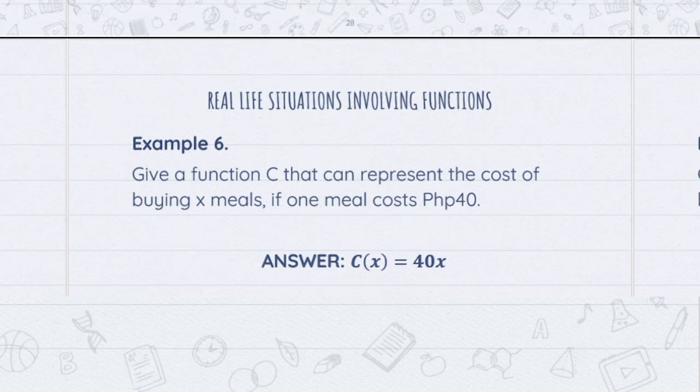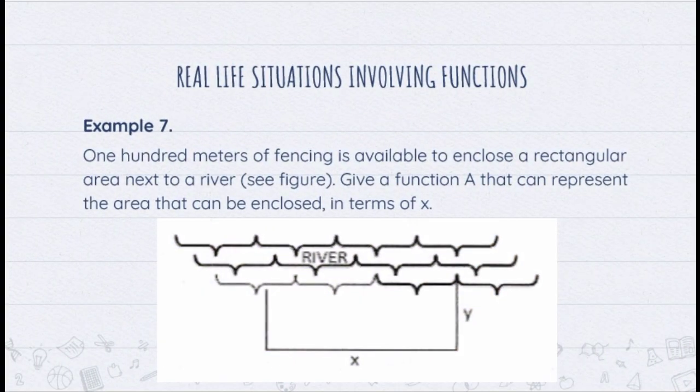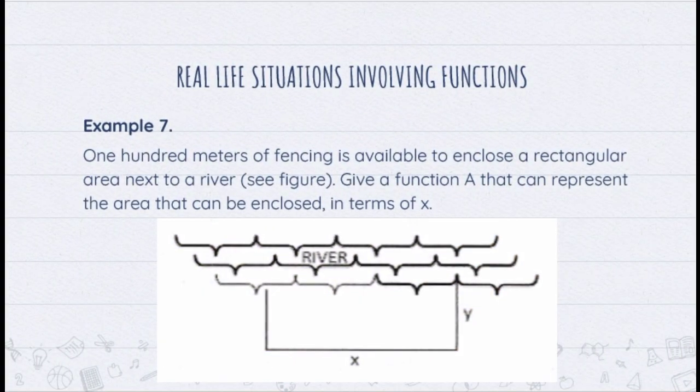Let's now proceed to Example 7. One hundred meters of fencing is available to enclose a rectangular area next to a river. Give a function A that can represent the area that can be enclosed in terms of X.